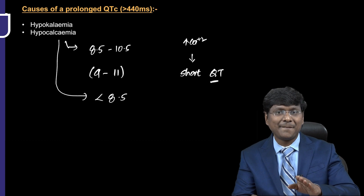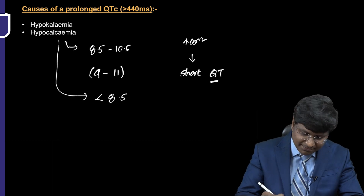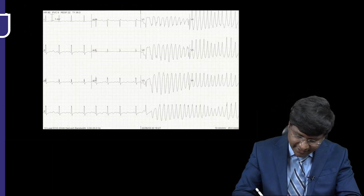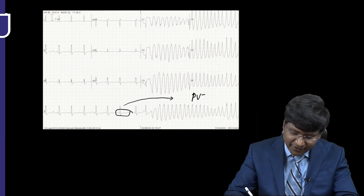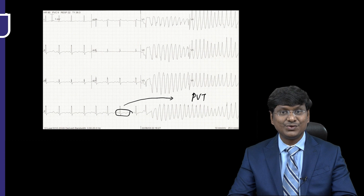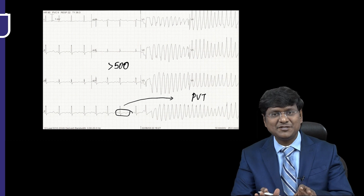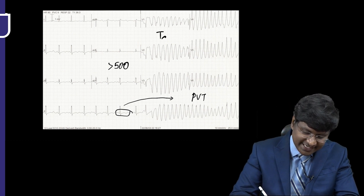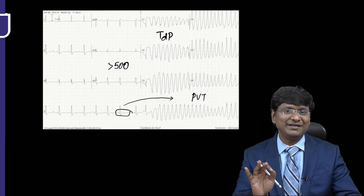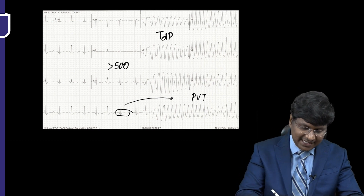When the QT interval is prolonged more than 500 milliseconds, you can see on this ECG there is QT prolongation along with a polymorphic ventricular tachycardia. When QT exceeds 500 ms, patients develop Torsades de Pointes, which is a polymorphic ventricular tachycardia.